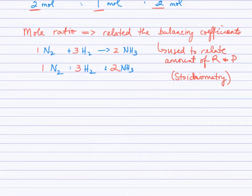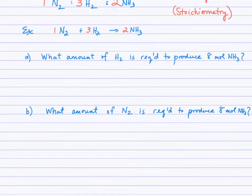Here's an example question using mole ratio. For the synthesis of ammonia: Part A, what amount of hydrogen gas is required to produce 8 moles of ammonia? Step 1, always start with a balanced equation.